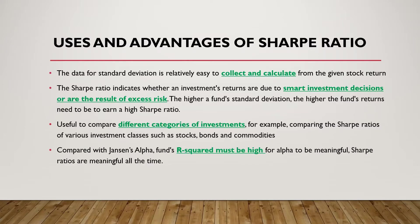Later we are going to talk about another ratio called Jensen's alpha. Comparing the Sharpe ratio to Jensen's alpha, one benefit of the Sharpe ratio is that it is always valid, while Jensen's alpha depends on something called R-squared. R-squared is a statistical term — it basically means how sure you are. A 99% R-squared means you are 99% sure, while a 50% R-squared means you are only 50% sure. With the Sharpe ratio, once you get the number you can immediately compare two different portfolios.